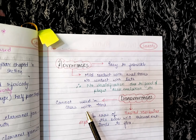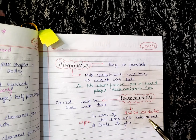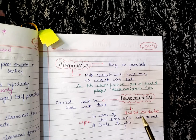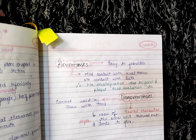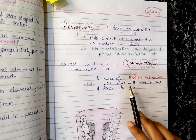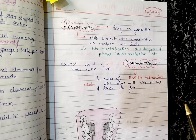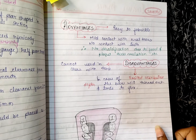The disadvantages are: first, it cannot be used in cases with tori. Second, in cases of limited vestibular depth, the bar will be thinned out and tend to flex.